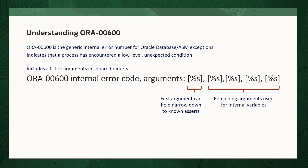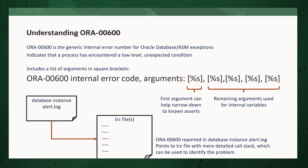The remaining arguments show the values for internal variables, which are useful in debugging. When an ORA-600 is encountered, it is reported in the database instance alert log. This entry has a pointer to a trace file which contains more detailed call stack information, which can be used to identify the problem. Depending on the cause of the ORA-600, it may be necessary to look at other information to isolate the exact cause, including understanding database and operating system configuration.